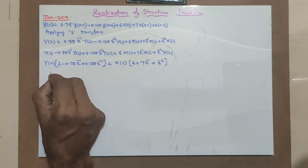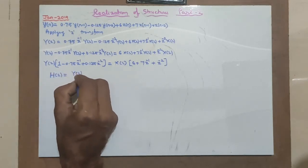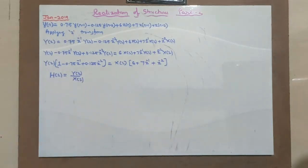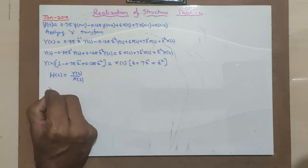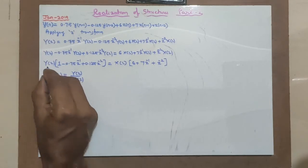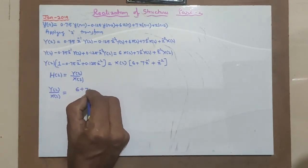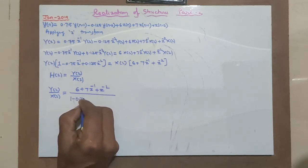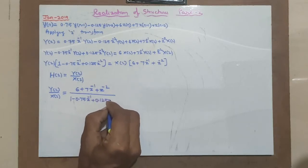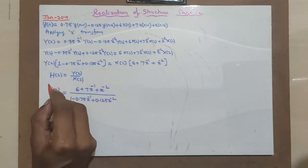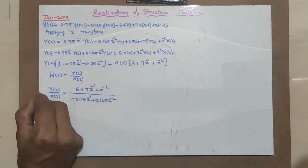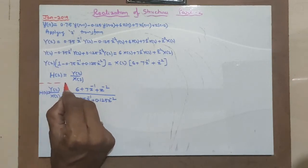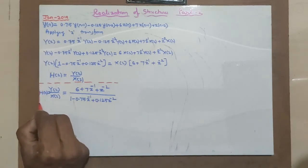Now I will factor out Y of Z so that it becomes: Y of Z times (1 minus 0.75 Z raised to minus 1 plus 0.125 Z raised to minus 2) equals X of Z times (6 plus 7 Z raised to minus 1 plus Z raised to minus 2). H of Z, which is output Y of Z divided by X of Z, becomes equal to (6 plus 7 Z raised to minus 1 plus Z raised to minus 2) divided by (1 minus 0.75 Z raised to minus 1 plus 0.125 Z raised to minus 2). This is H of Z.